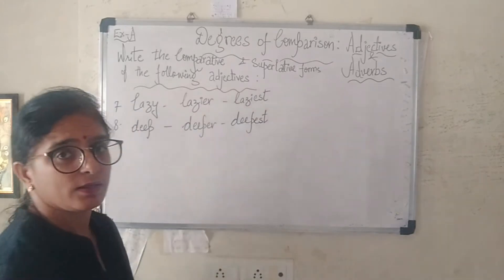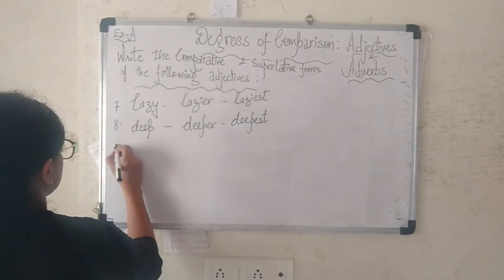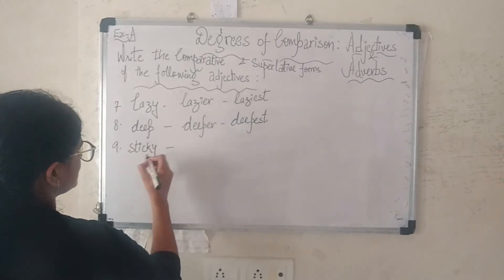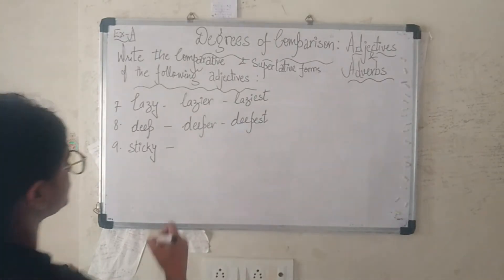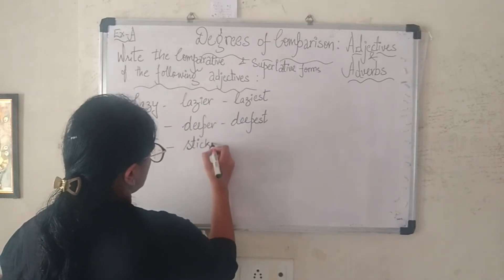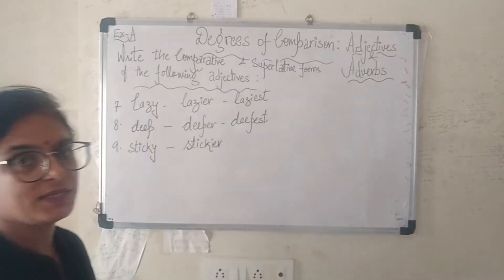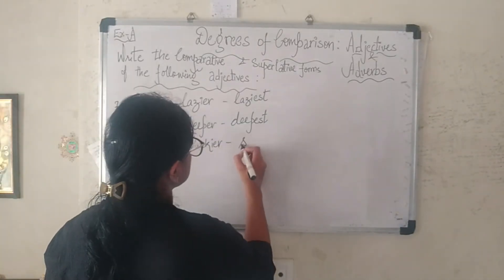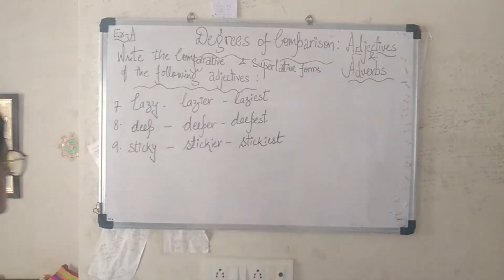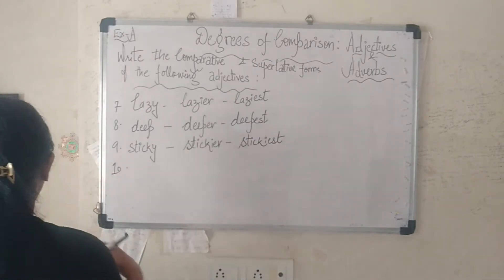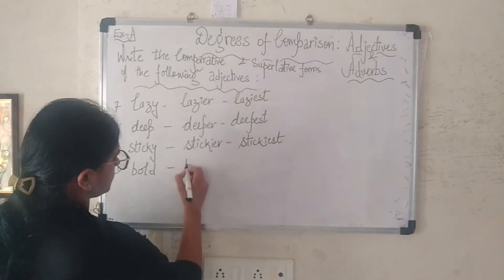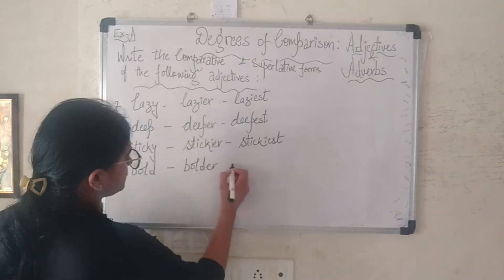Number nine is 'sticky' (s-t-i-c-k-y). Again, the last letter is 'y', so change it to 'i-e-r': 'stickier' (s-t-i-c-k-i-e-r), and the superlative is 'stickiest'. Next, adjective ten is 'bold' (b-o-l-d): its comparative form is 'bolder' and the superlative is 'boldest'.